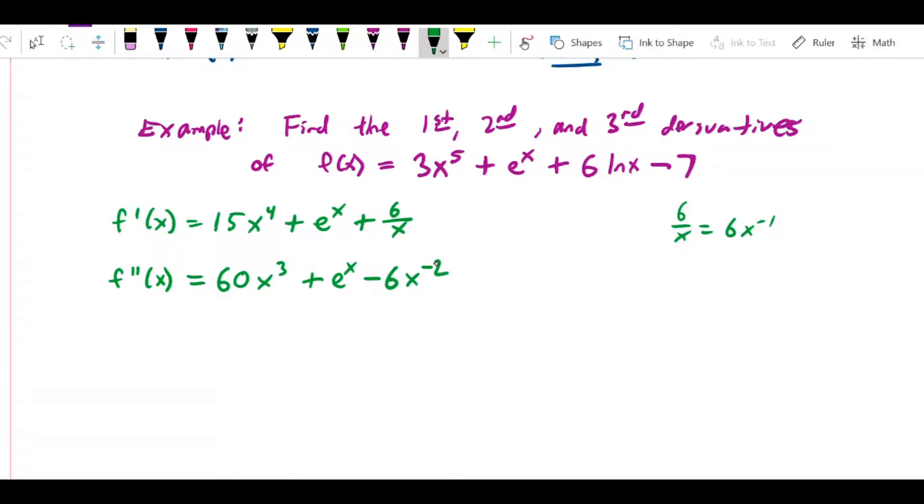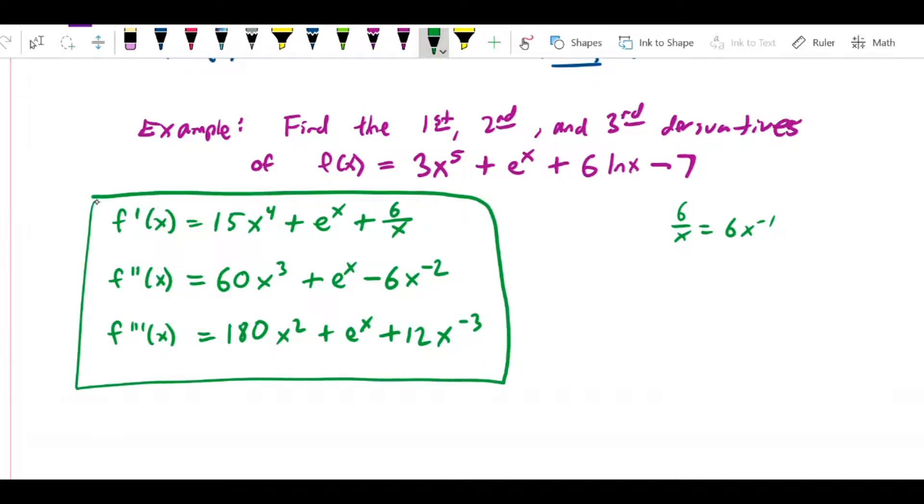I can do this one more time. f'''(x) is 3 times 60, which is 180, and that's x, lower the exponent by 1, giving us x^2. This e^x, once again, is its own derivative. And then we have -2 times -6 is positive 12x^(-3). There are the first three derivatives of this function.